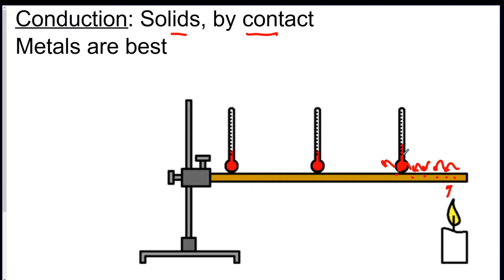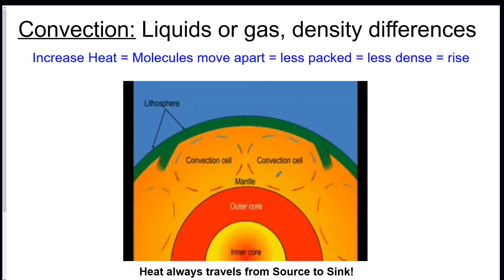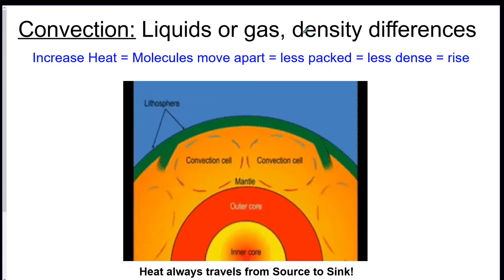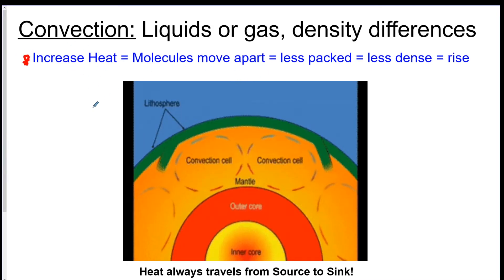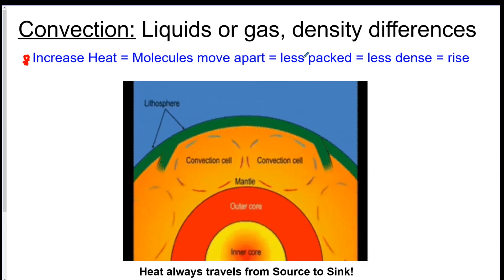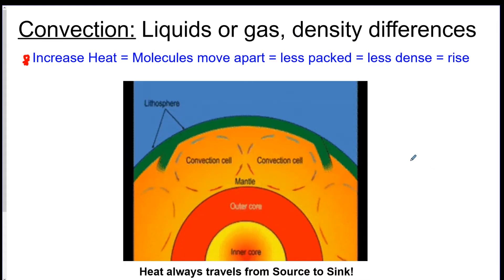Convection is when you have heat transfer through a liquid or a gas, and the key factor has to do with density differences. I put this cheat sheet in blue — you've got to know this: if you increase the heat of something, the molecules move further apart, which means they're less packed, which means the density is less, which means the substance will start to rise.